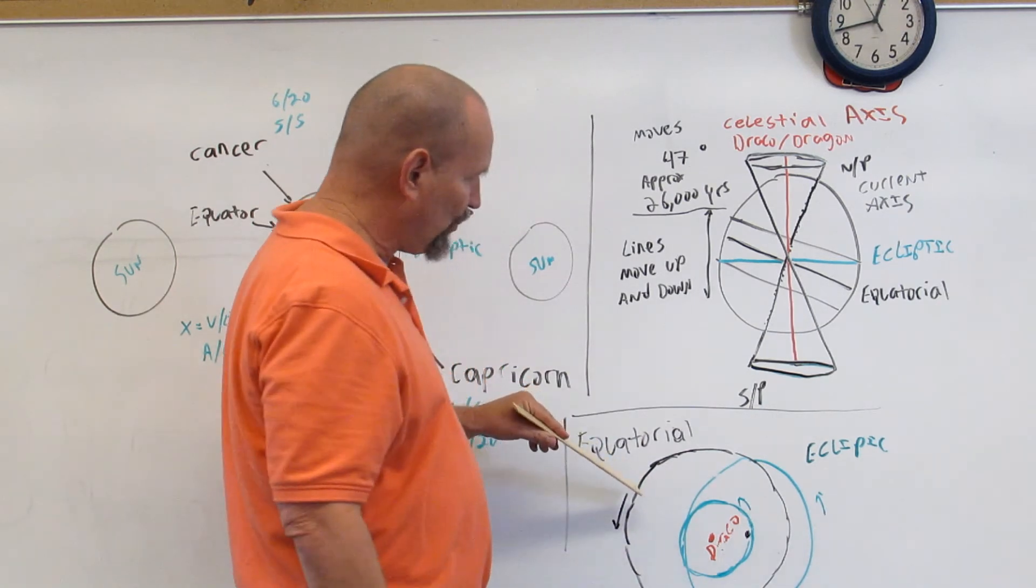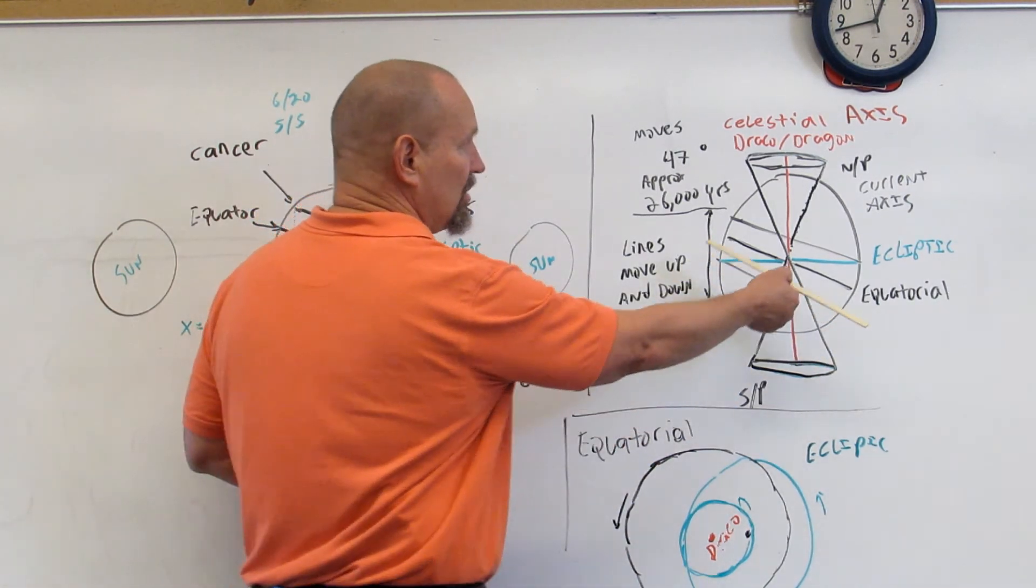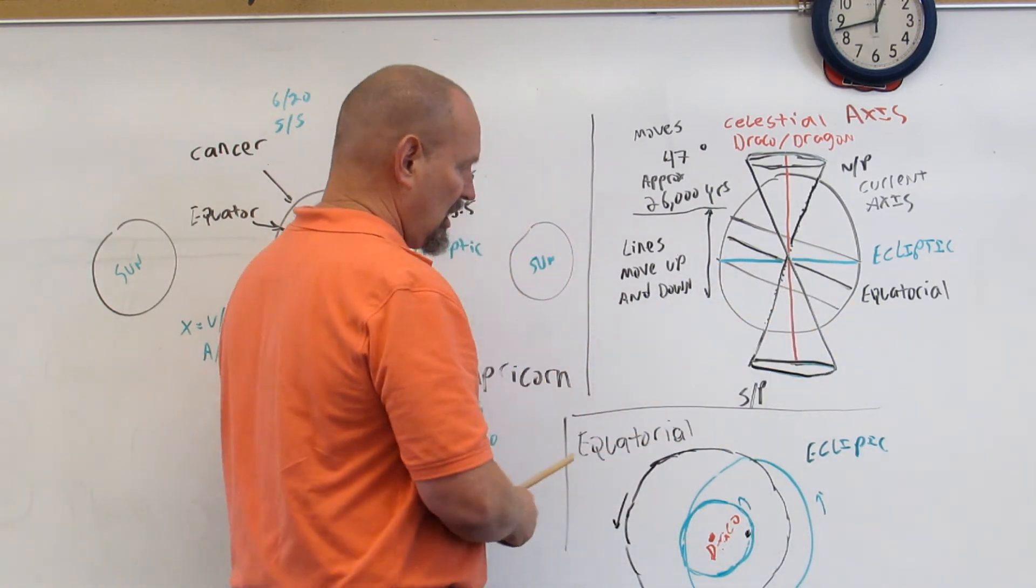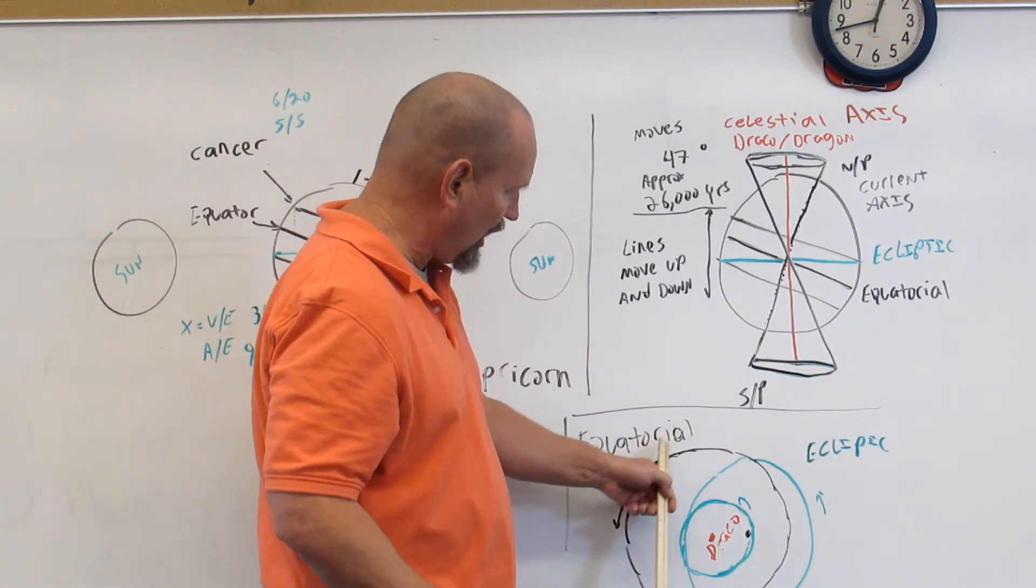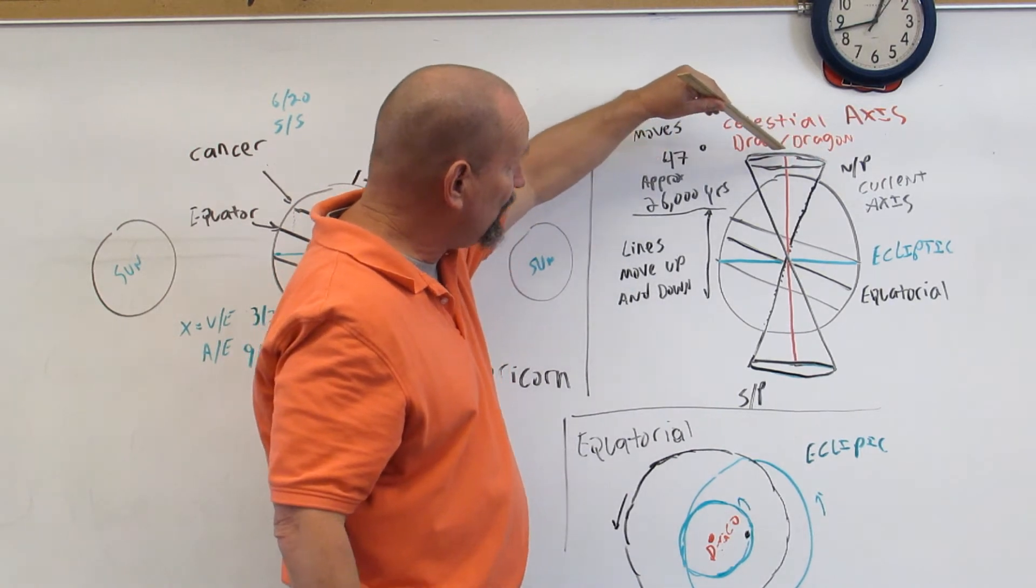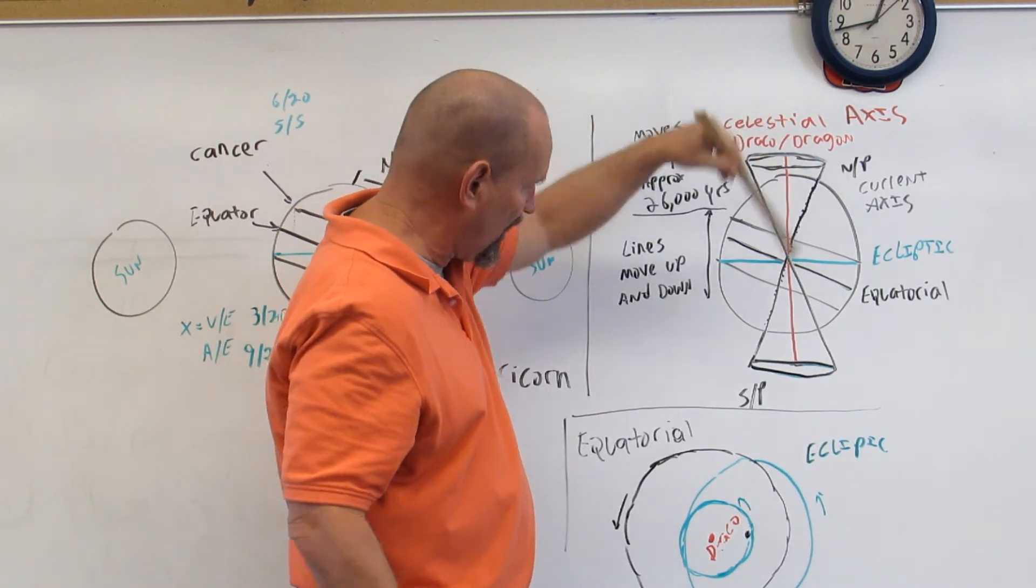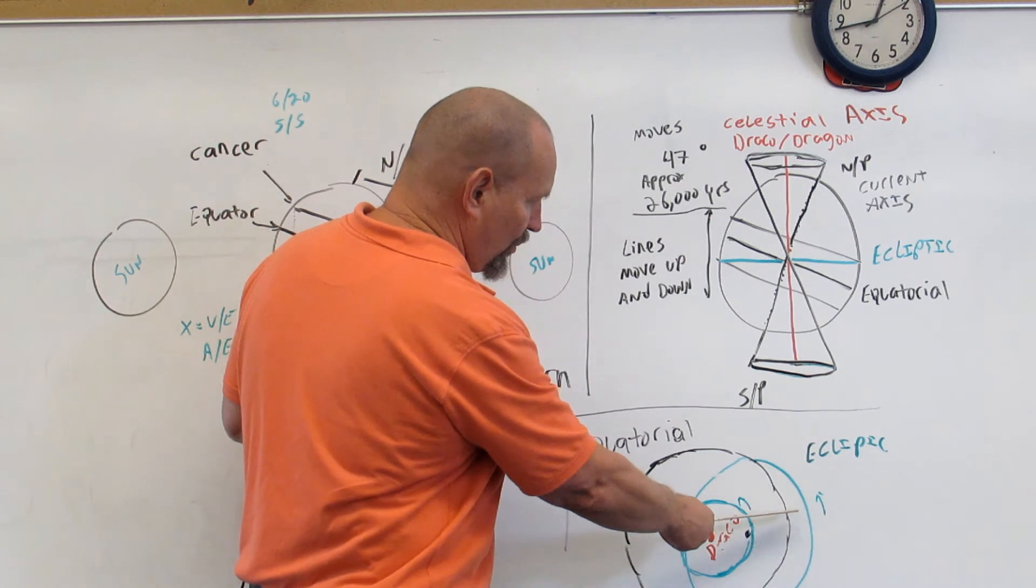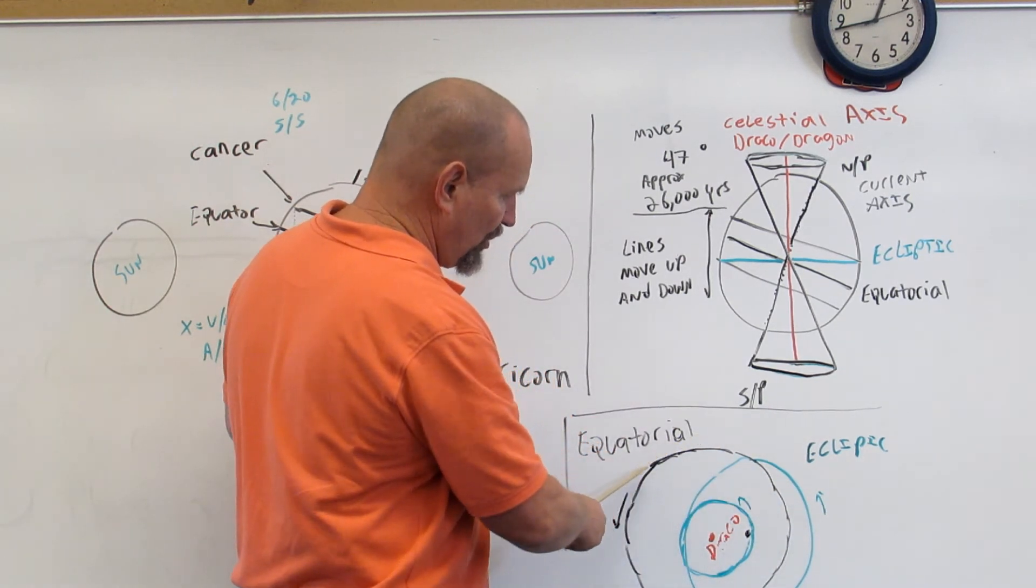This line right here represents the equatorial orientation and it's showing how this circle right through here, which is our equatorial orientation, this equatorial orbit goes this way or this movement goes this way as well.